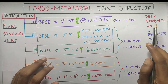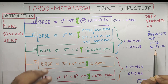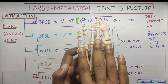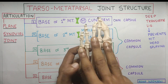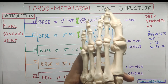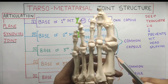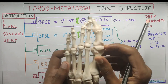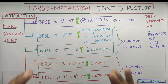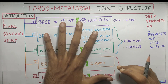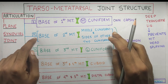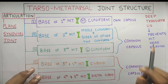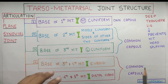This joint gets its stability from the deep transverse ligament, which prevents the metatarsal heads from splaying. In a normal foot, the metatarsal heads tend to splay outward, and they are held together by this transverse ligament. In this model, a spring represents the function of the deep transverse ligament. So the key takeaway for the tarsometatarsal joint structure is the five articulations and their capsule groupings, with stability provided by the deep transverse ligament.